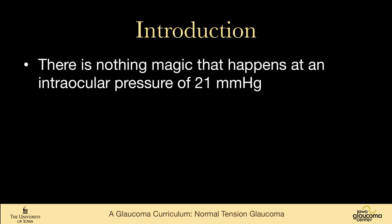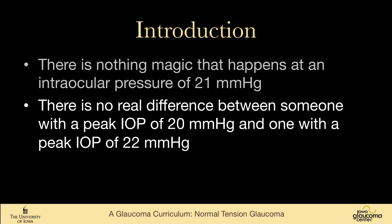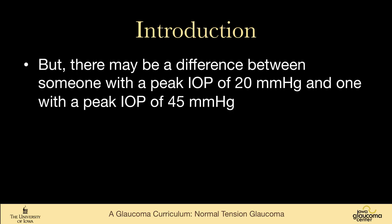It's really important to recognize that nothing magic happens at an intraocular pressure of 21 millimeters of mercury. There's really no difference between someone with a peak pressure of 20 and someone with a peak pressure of 22, even though one might call the first person normal tension and the second person primary open angle glaucoma. It's extremely arbitrary, but there's probably a difference between someone with a peak pressure of 20 and someone with a peak pressure of 45 millimeters of mercury.